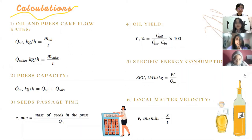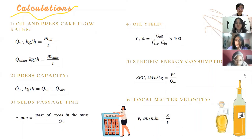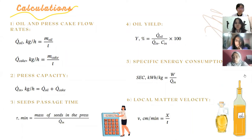The calculations involved in this experiment are as follows. Oil flow rate is measured by mass of oil over the pressing time. Pressed cake flow rate is measured by mass of cake over pressing time. Press capacity is the sum of oil and pressed cake flow rate. The seed passage time is measured by mass of seeds in the press over press capacity. Oil yield is the oil flow rate over the product of press capacity and oil content in canola seeds. Specific energy consumption is measured by power consumed by the press over press capacity. Local material velocity is measured by the distance travelled by the flax seeds over time.